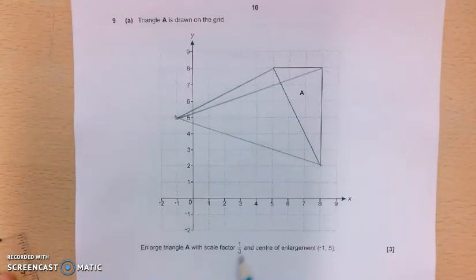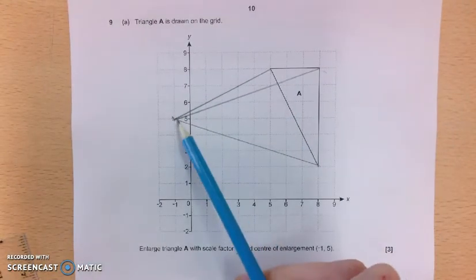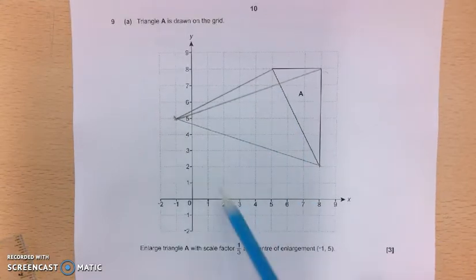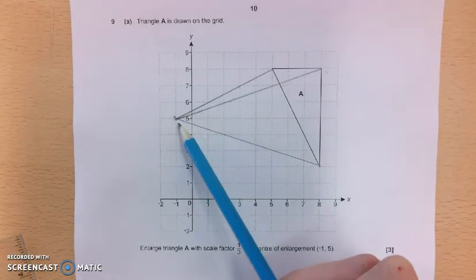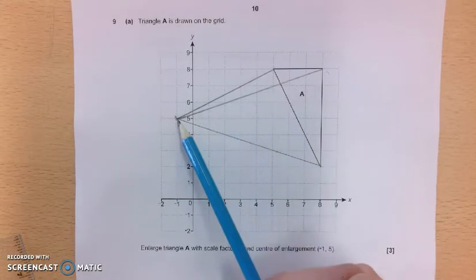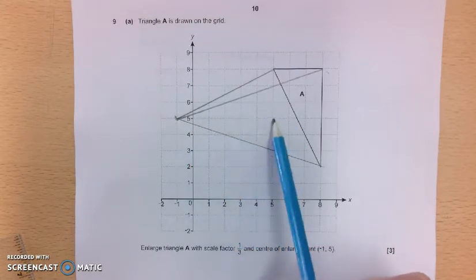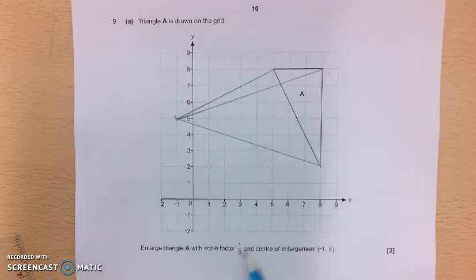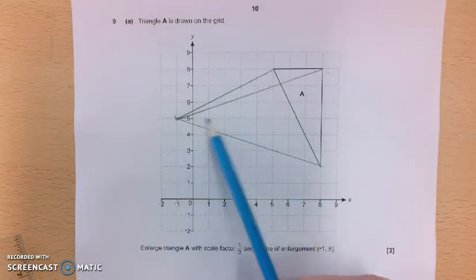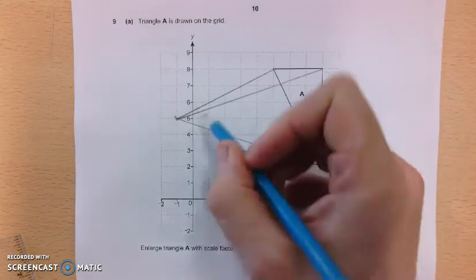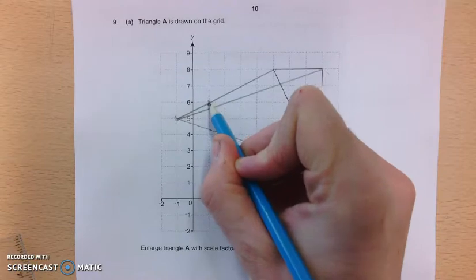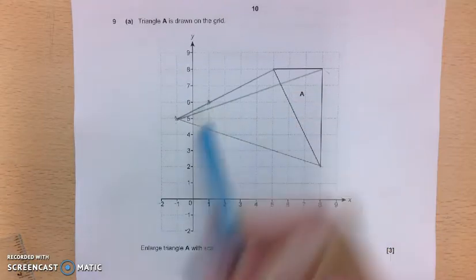So scale factor 1 third. So effectively, the distance between the centre of enlargement and the corner is going to be 1 third of this distance. So now I like to use the grid lines here. We can see, going from my centre to this corner, it's 1, 2, 3, 4, 5, 6 squares along, and it's 1, 2, 3 squares up. So I'm going to do a third of that. So instead of 6 squares along, it will be 2 squares along. And instead of 3 squares up, it will be 1 square up. And you can see, quite nicely, that gives me a point on my ray line.